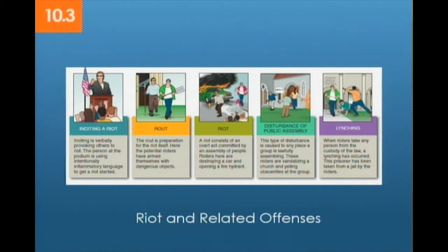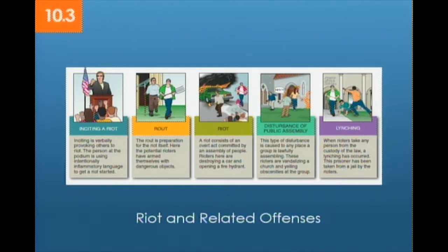Most people have heard of the term lynching but don't know its technical legal definition. Lynching is when a person is taken from the custody of the law — a person in lawful custody is seized by a mob, a lynch mob, and killed. They may be taken from a jail or a police car and dragged out and killed. There is a long and ugly history to lynching in the United States — it used to be racially motivated and was a mob action, not just an individual action.